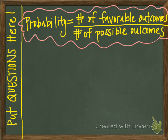The fraction is written like this: the top part represents the number of favorable outcomes — these are things that we want to happen. The denominator represents the number of possible outcomes — all of the things that could possibly happen. Probability falls between 0 and 1. If the probability is 0, it absolutely will not happen; if it is 1, it absolutely is sure to happen.